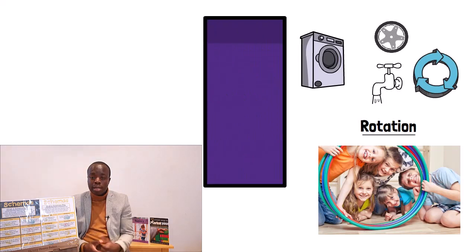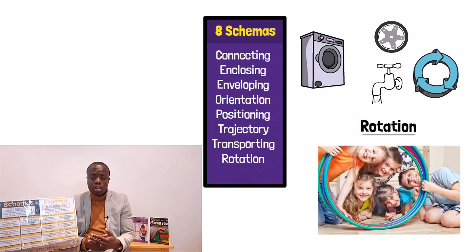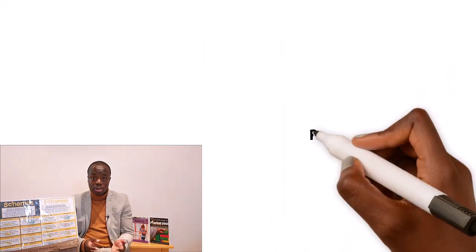But those are the eight most common types of schemas. Now you may have listened and recognised that this is something your child or children do. But hopefully now understanding the rationale behind it, that your child is experimenting should help you to support your child and provide activities to allow them to explore these schemas.